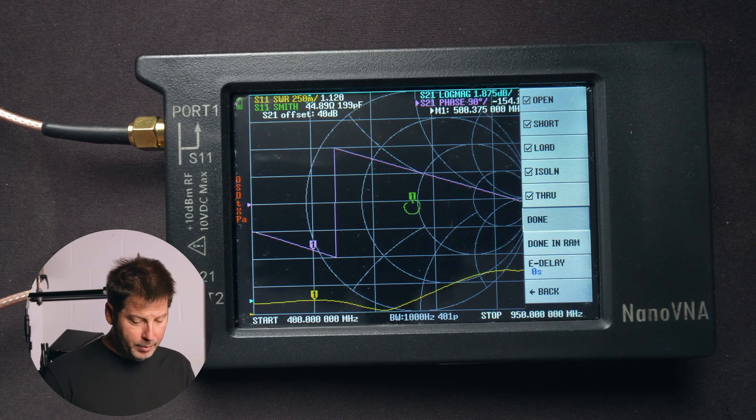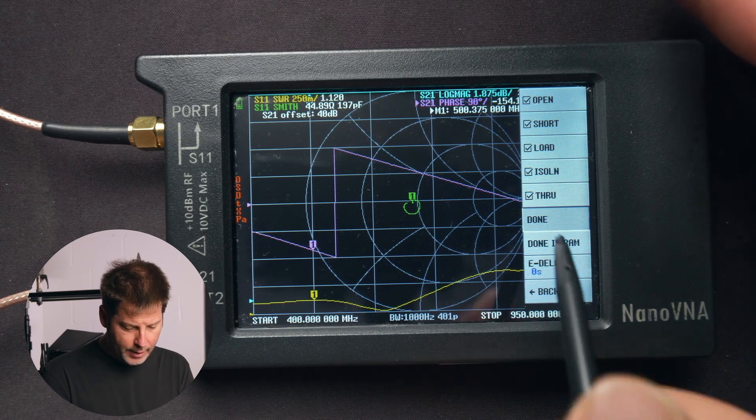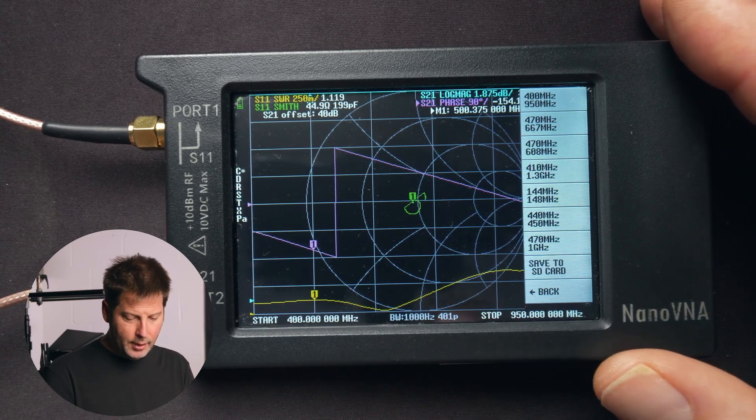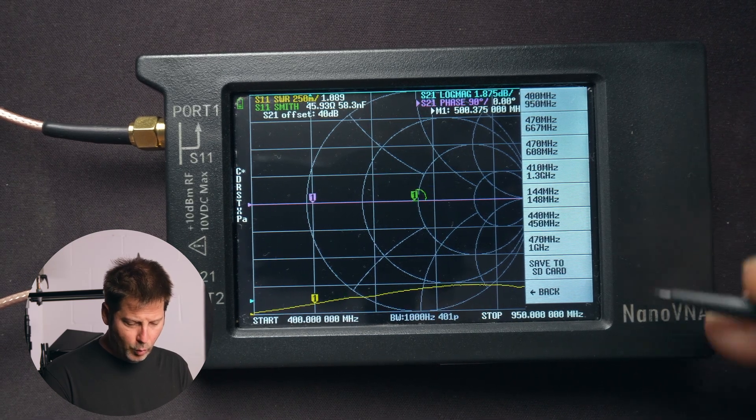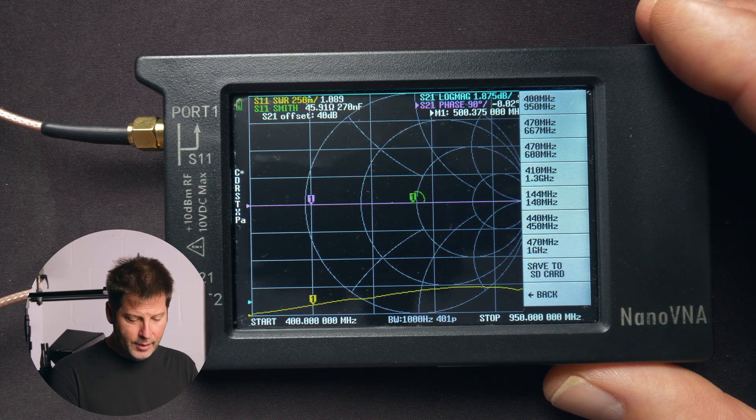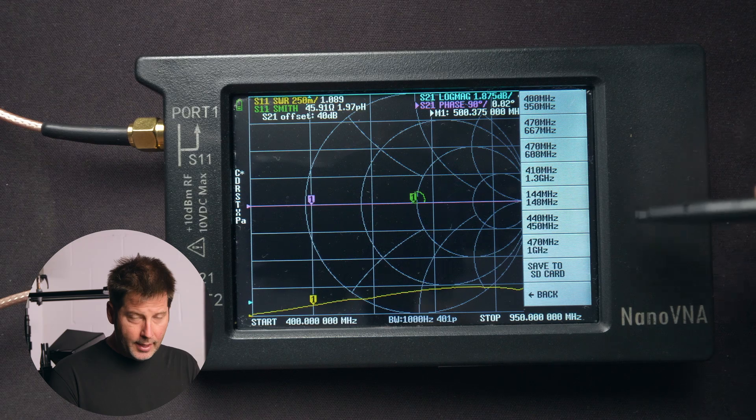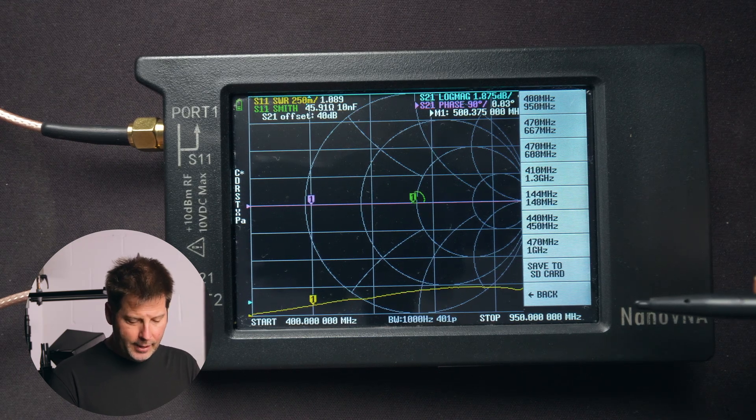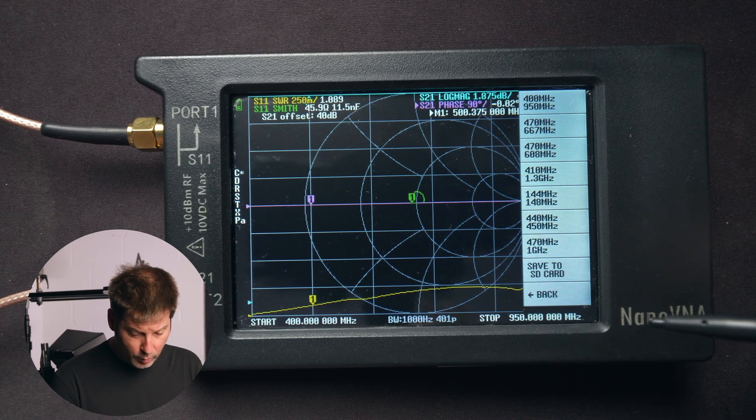Now that we've completed the through calibration, our next step is we're going to press done. And notice here that we have all of these different slots or choices where we can save the preset. To save our preset, we simply need to choose one of the choices. If this is the first time that you've calibrated the NanoVNA, you'll notice that these will say empty.